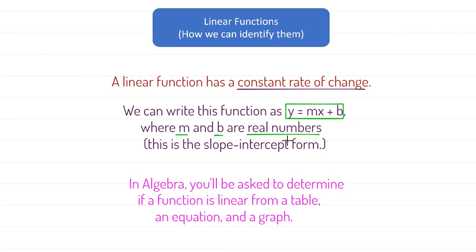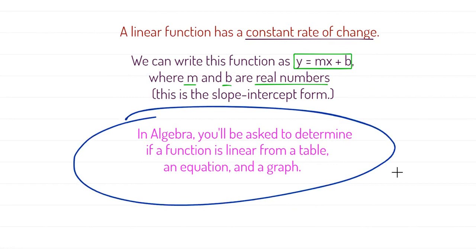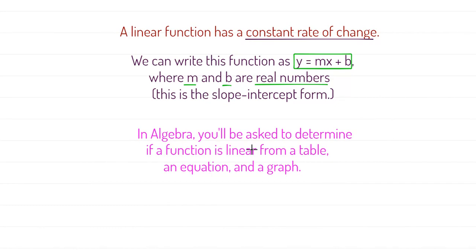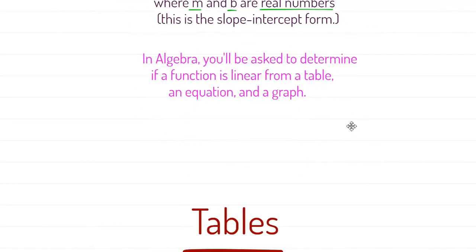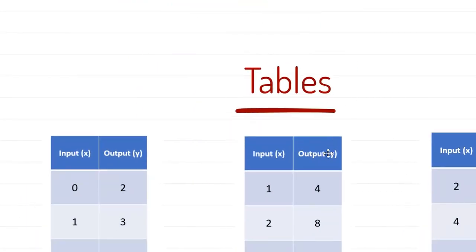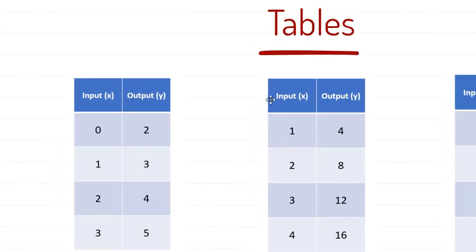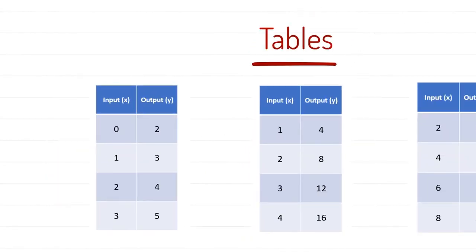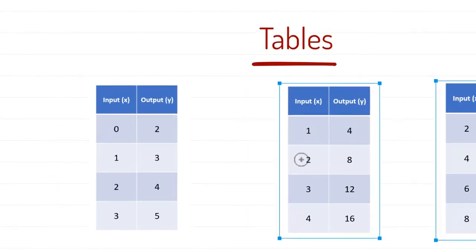Basically, in algebra when identifying linear functions, they're going to give you either a table, an equation, or a graph and ask you: is this function linear? They could also give you coordinate points, which is pretty much the same thing as a table. Let's jump right into how we can look at a table and see if the function represented is linear.